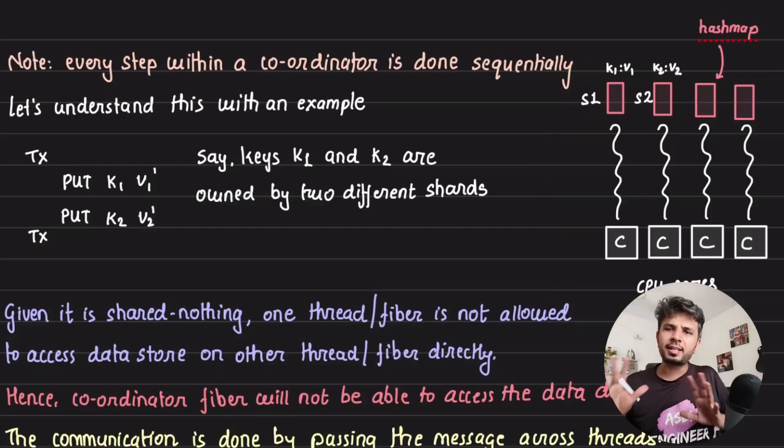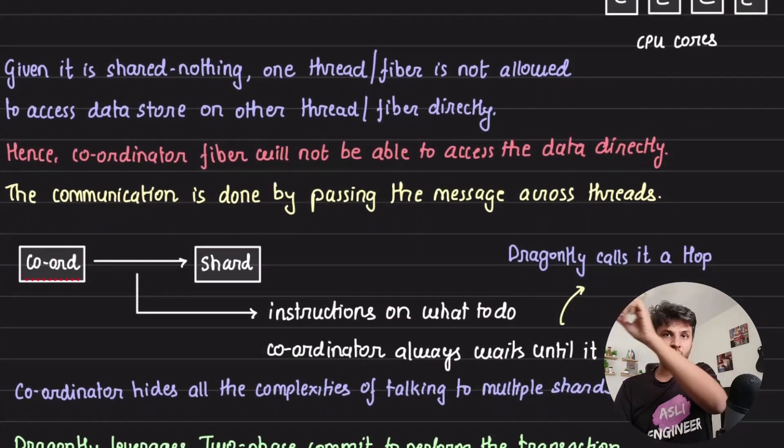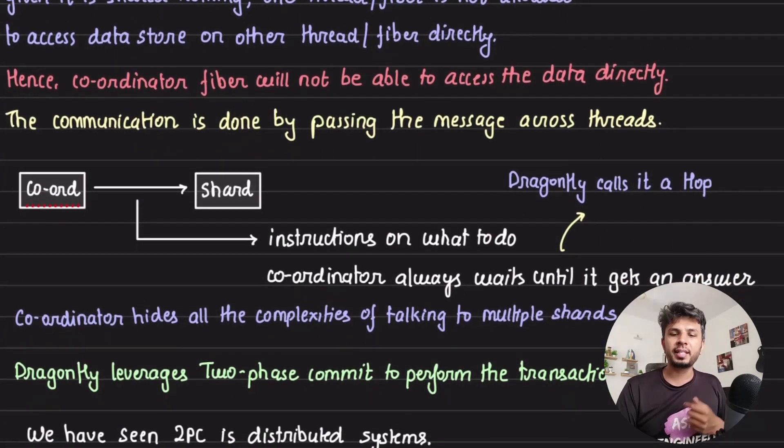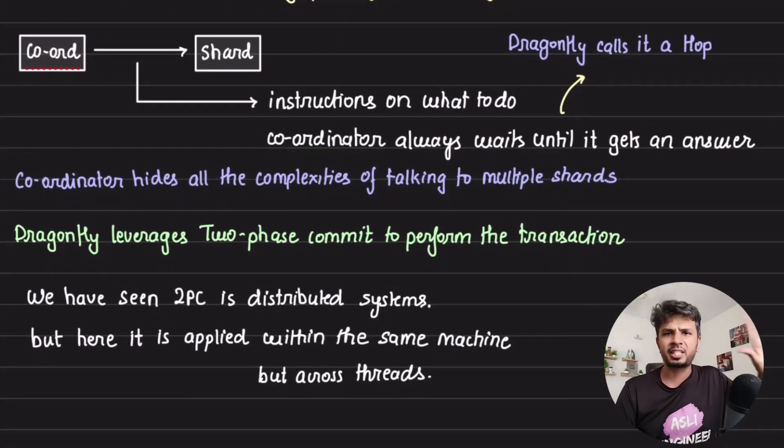It needs to adopt the message passing paradigm. In a very simple analogous way, think of Go channels as a way to do message passing between Go routines. Very similar to that happens over here. The coordinator is not allowed to access the data directly, so the entire thing is done by passing messages across the threads, adopting a message bus pattern.